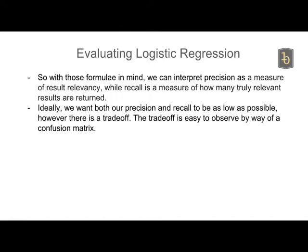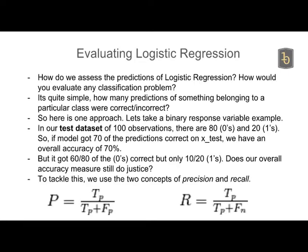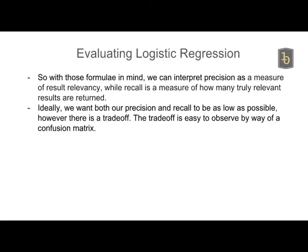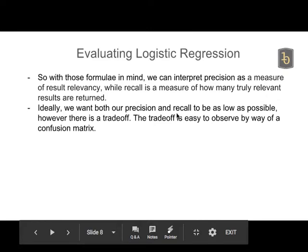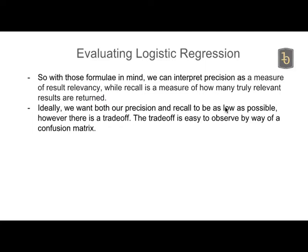We can interpret precision as a measure of result relevancy — how relevant were my results — while recall is a measure of how many truly relevant results are returned. Ideally we want both precision and recall to be as high as possible, but there is a trade-off between them.